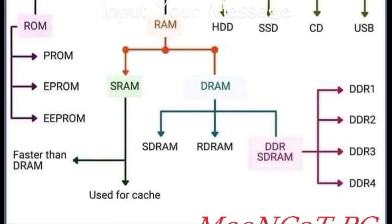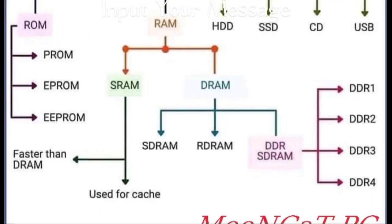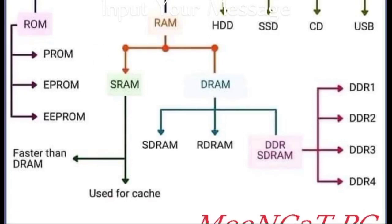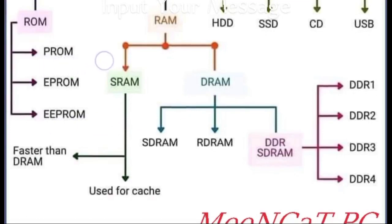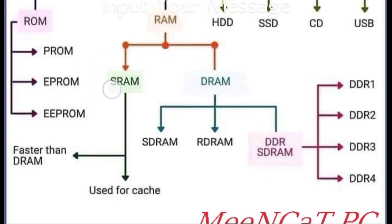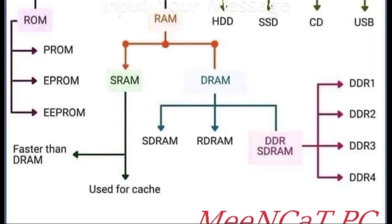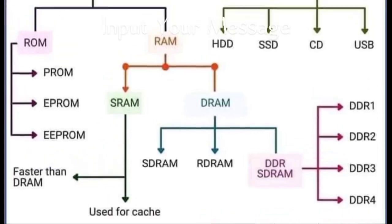ROM, the read-only memory, is divided into three parts. First is PROM — programmable read-only memory. Second is EPROM — erasable programmable read-only memory. And third is EEPROM — electrically erasable programmable read-only memory. These are all parts of ROM.